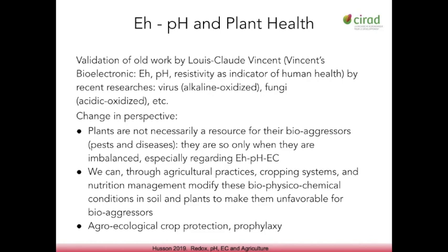He developed a diagram where he had pH across the bottom of the chart and EH — redox — along the left-hand side, and he divided the chart into four quadrants: alkaline and oxidized, alkaline and reduced, acid and oxidized, and acid and reduced. He identified different diseases as expressing in different quadrants — fungi versus viruses versus bacteria, etc. His research has been updated and brought up to 2020 and beyond by Olivier Hassan, who has done incredible research on evaluating and monitoring plant health and identifying the zones where plants become susceptible or resistant to different types of diseases and insects.